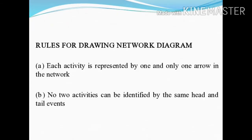Next is Rules for Drawing Network Diagram. The first rule is that each activity is represented by one and only one arrow in the network. The second rule is that no two activities can be identified by the same head and tail events.